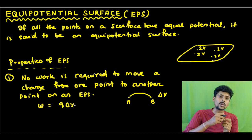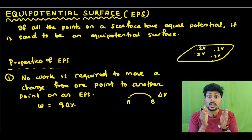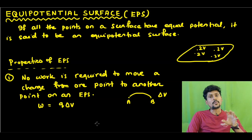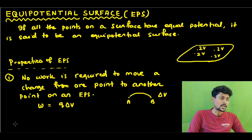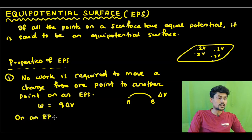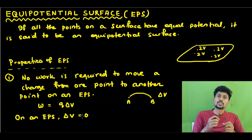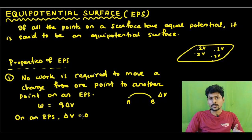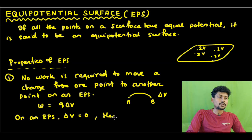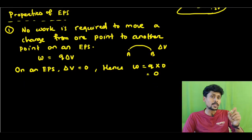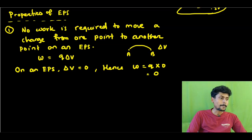When we move a charge from one point to another point on an EPS, all points have the same potential, so the potential difference delta V is zero. Hence W equals Q into zero, which equals zero. So when a charge moves from one point to another point on an EPS, no work will be done. This is the first property.